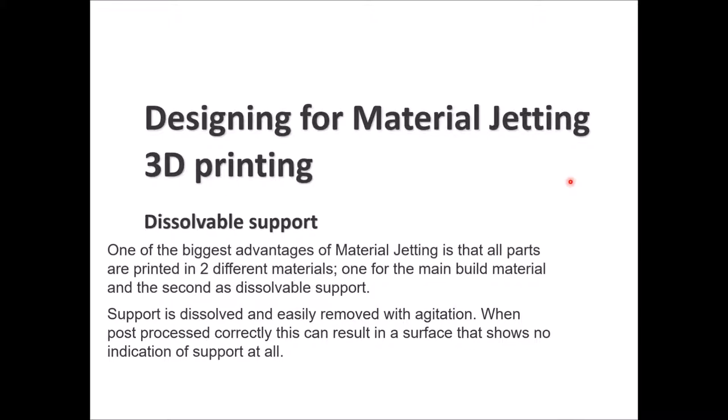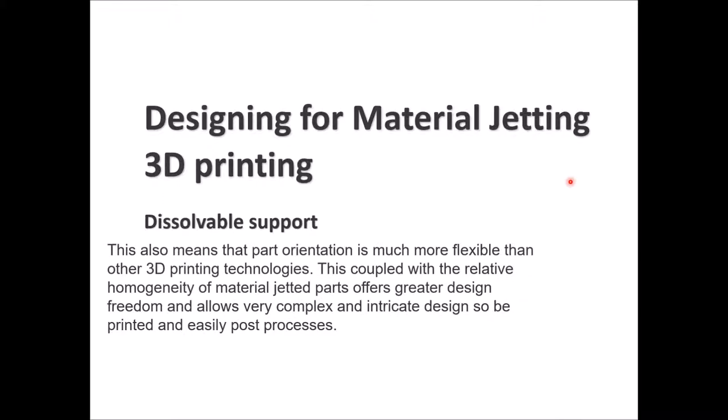Material jetting provides dissolvable supports. You design the main part with one material, and all supporting structures use a different material that can be dissolved. When printing is complete, you dip the part in a specific solvent that dissolves the support material while leaving the original part material intact, giving you a surface with no indication of support at all. This also makes part orientation more flexible than most other 3D printing technologies and gives greater design freedom for complex parts.